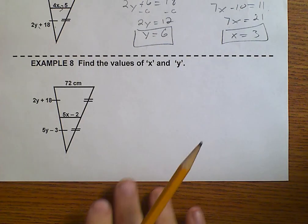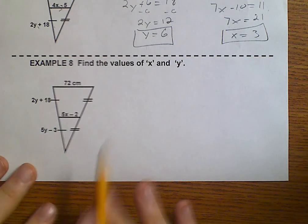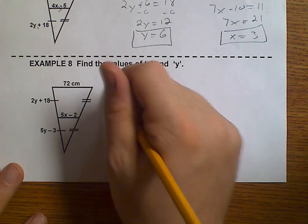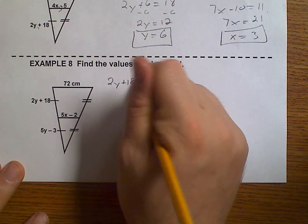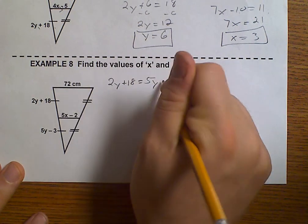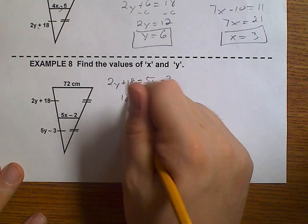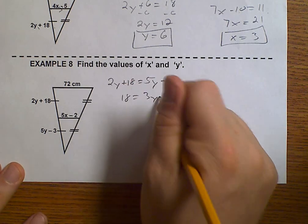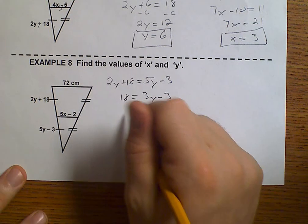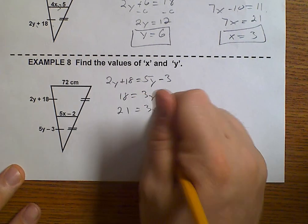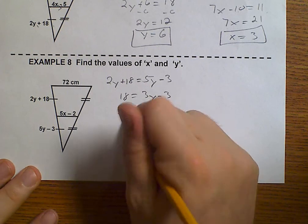And now we're on number 8. Same thing. 2Y plus 18 is going to equal 5Y minus 3. 18 equals 3Y minus 3. 21 is 3Y. So Y is 7.